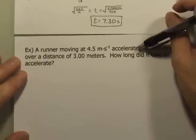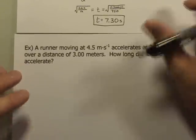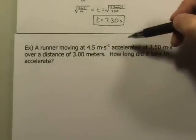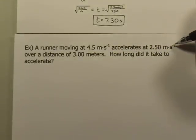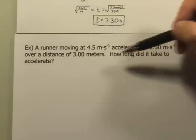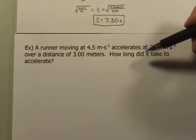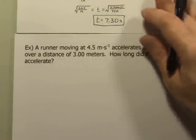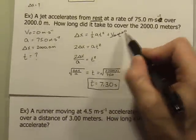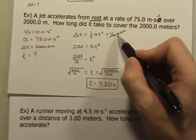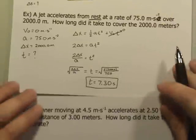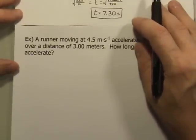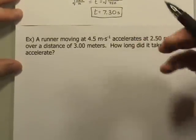Now let's look at a problem in which the quadratic nature is not going to go away. If a runner is moving at 4.5 meters per second and accelerates at 2.5 meters per second squared over a distance of 3 meters, when we look for the time, we're going to run into a problem because the initial velocity of 4.5 means I can't just cross out the t term — I can't get away with that. Everything is going to have value in this equation.